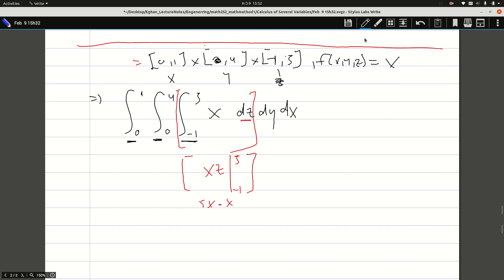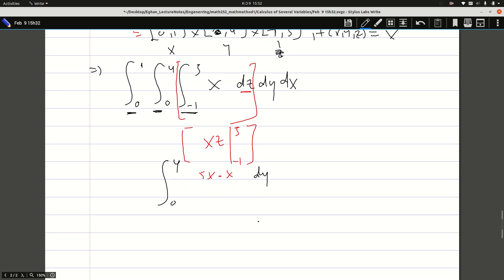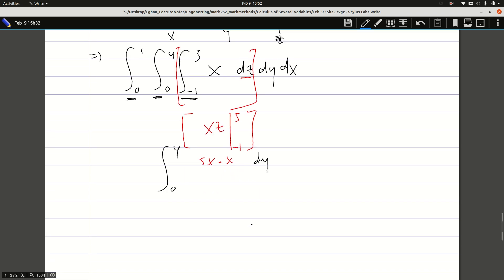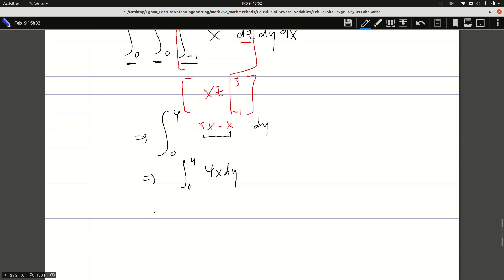Now I go back and take the second integral, the middle one from 0 to 4 dy. I can simplify this to the integral of 4x dy, which gives me 4x times y from 0 to 4. This gives me 4x times 4 minus 0, which is 16x.